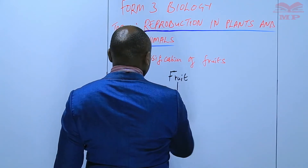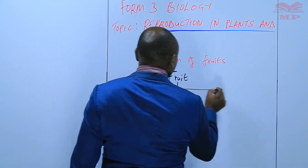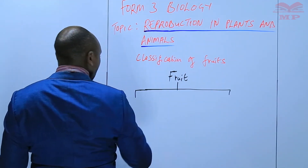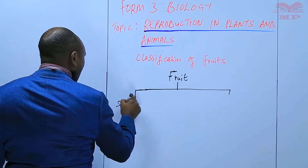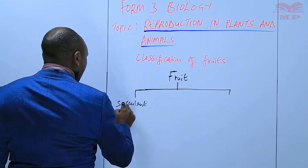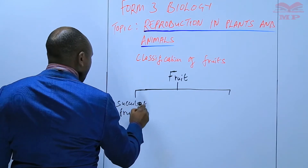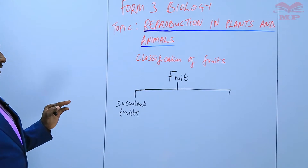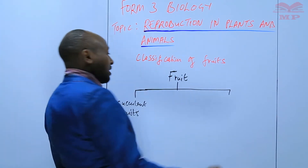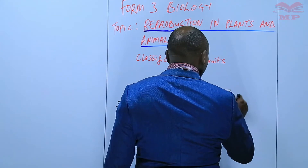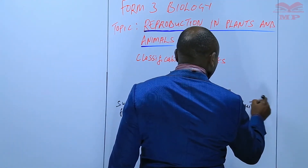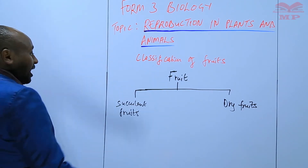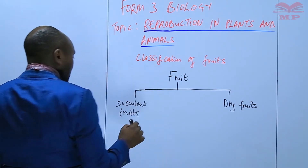Fruits are broadly classified into two. We have what we call the succulent fruits — these are the juicy fruits, the fruits that have juice in them, they are watery inside. And then we have the dry fruits. Those are the two broad categories.